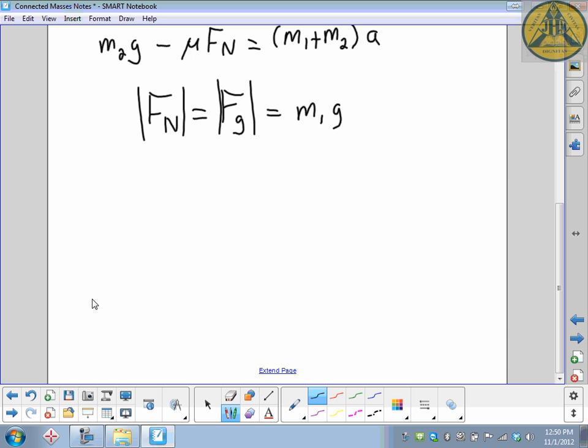Summarizing the equations, it's M2g minus mu M1g equals M1 plus M2 times A. Force of friction acts to the left, so negative. Force of gravity from the second mass is pulling it to the right, so it's positive. And we can put our numbers in here to figure out where our acceleration is.